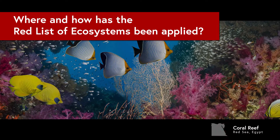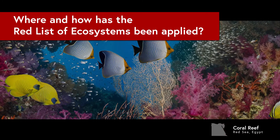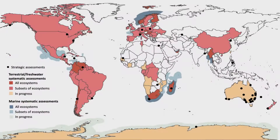More than 3,000 ecosystems have been assessed worldwide using the Red List of Ecosystems criteria across marine, freshwater, and terrestrial realms in over a hundred countries and on all continents. There's been uptake by governments, non-government organisations, industry, and the community. This has led to impacts such as government regulation and protection of ecosystems, investment in restoration, and industry decision-making — for example, in Colombia.